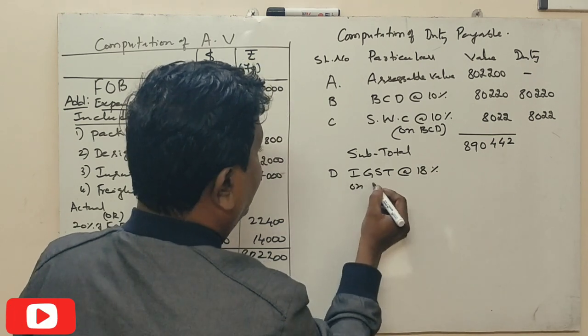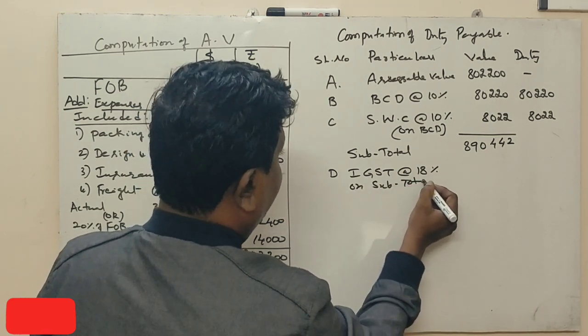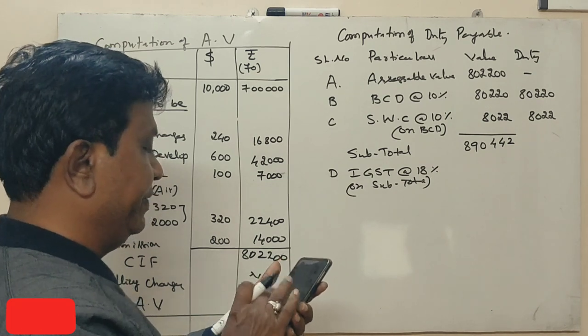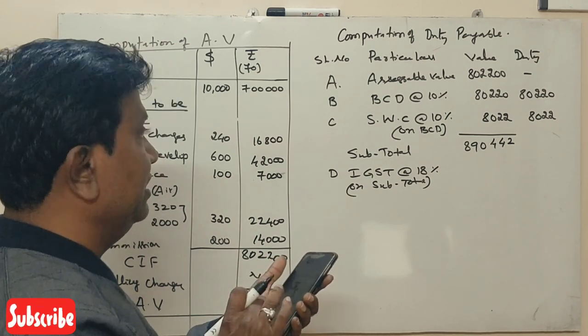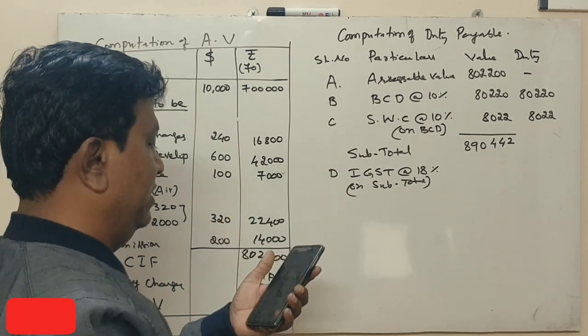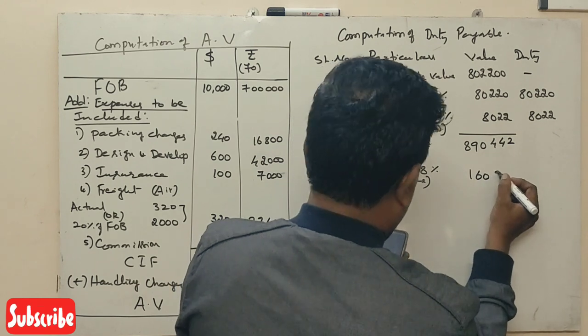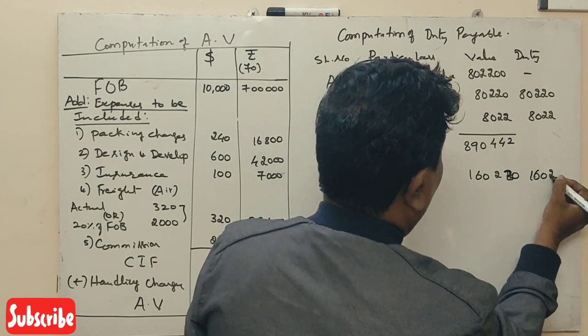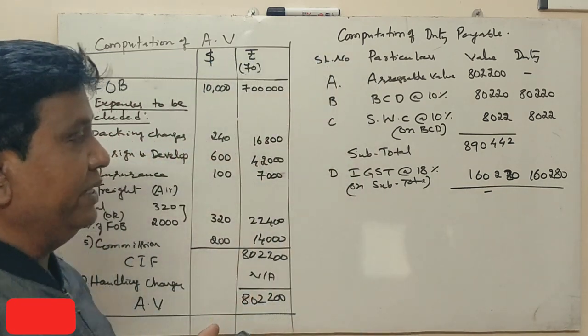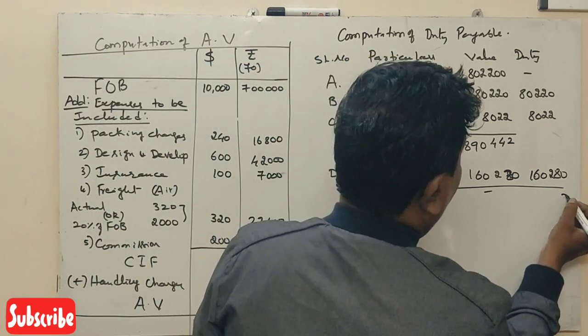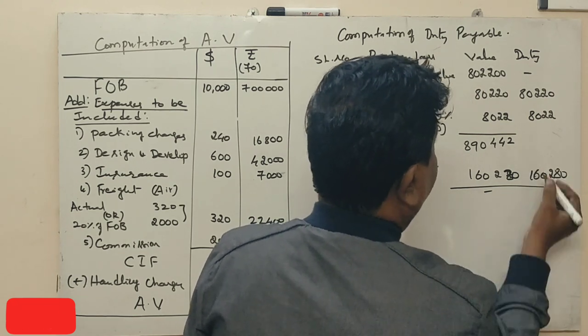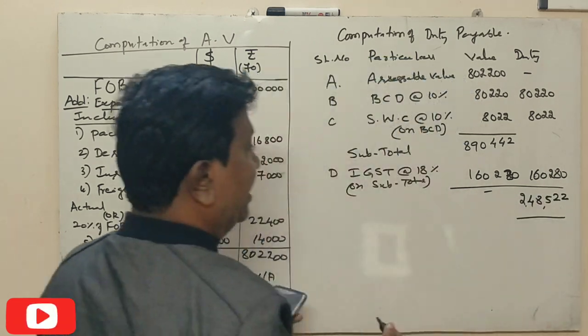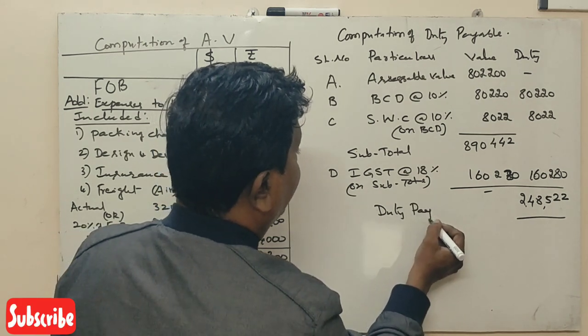D: IGST at 18 percent. Subtotal is 8,90,442 into 18 percent equals 1,60,280 rupees. Total duty payable is calculated.